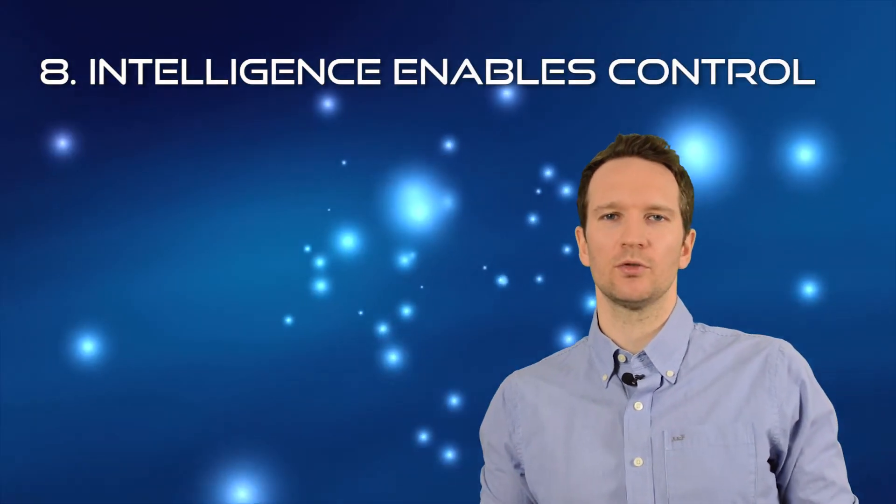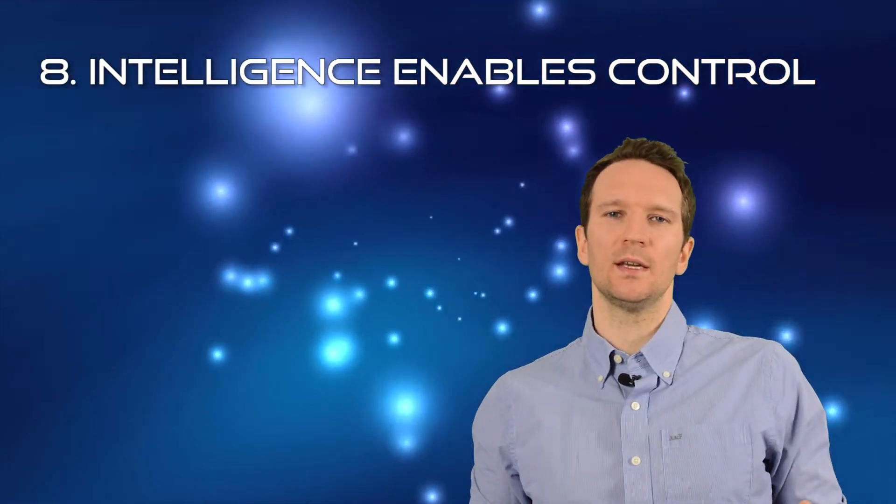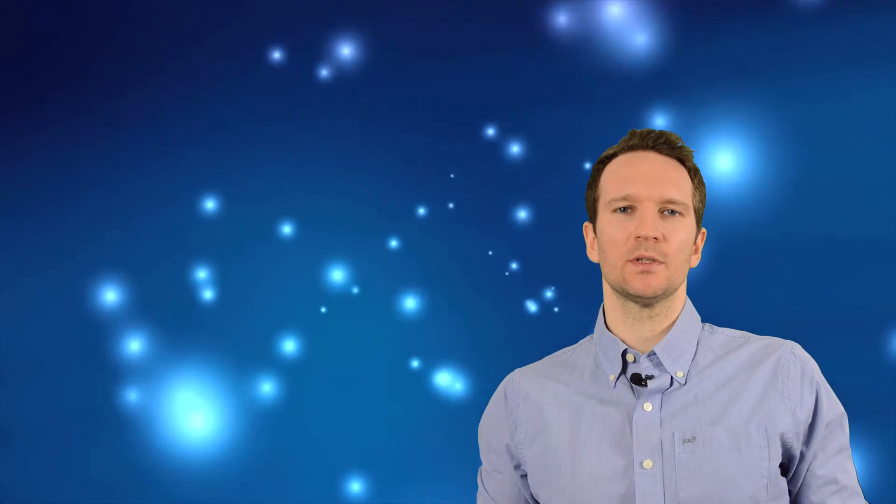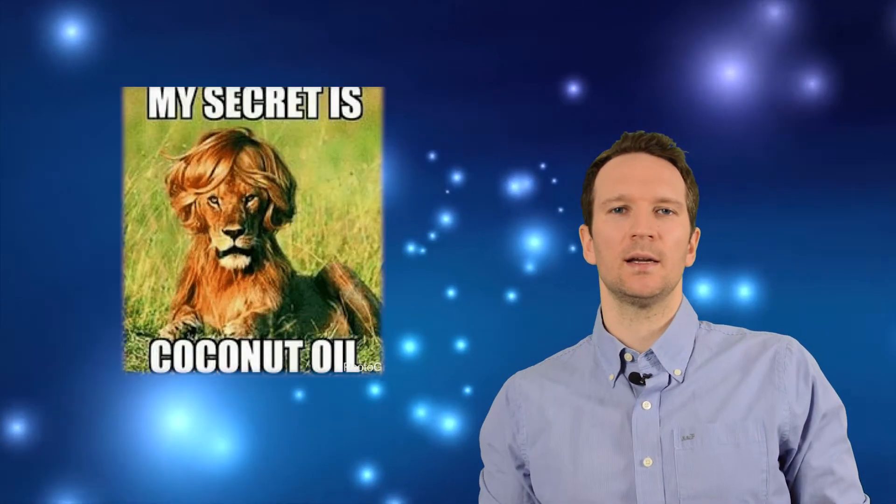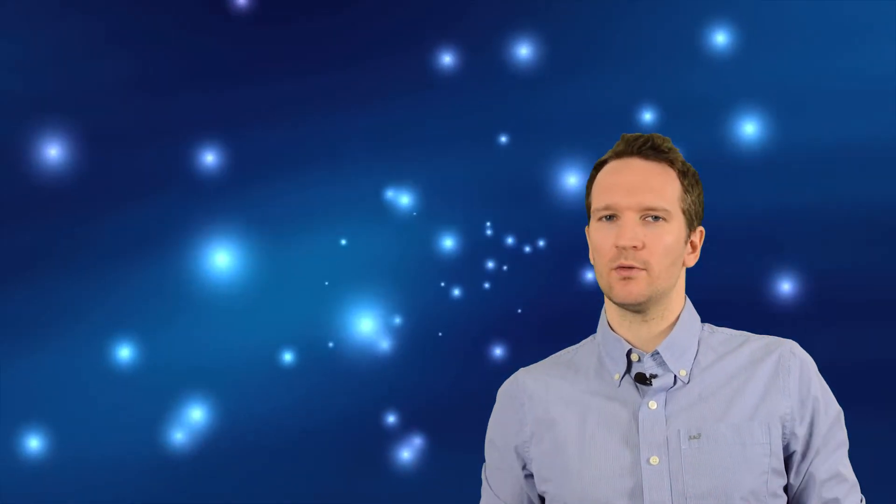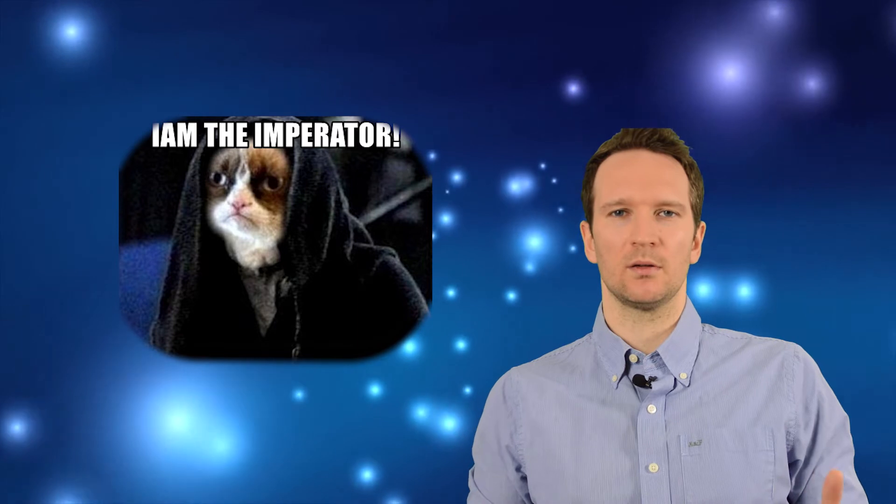Number eight. Intelligence enables control. We see that already today. We are controlling big and dangerous animals like gorillas, snakes, lions and so on and so forth, because we are simply smarter than them and not stronger. So by being more intelligent, we control them. So the same applies for the machine intelligence logic. Whatever is smarter has control over the other.